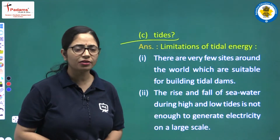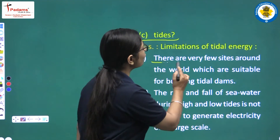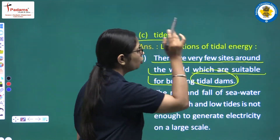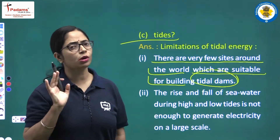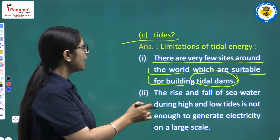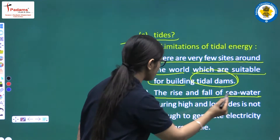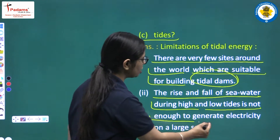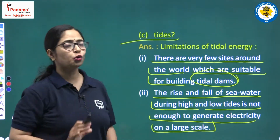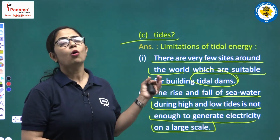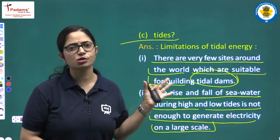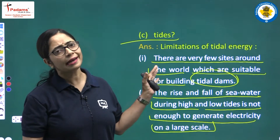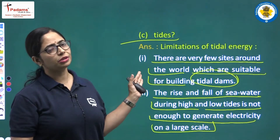Limitations of extracting energy from tides: There are very few sites around the world suitable for building a tidal dam. Also, the rise and fall of sea water during high and low tides is not always strong enough to generate electricity on a large scale.